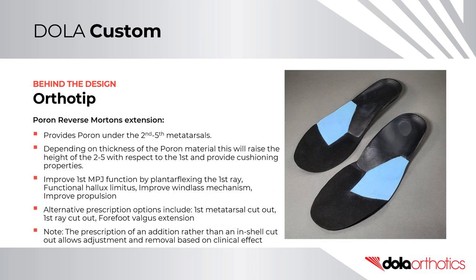Ortho Tip – A Poron reverse Morton's extension provides Poron under the second to fifth metatarsals. Depending on Poron thickness, it raises the height of the second to fifth with respect to the first and provides cushioning. It can improve first MPJ function by plantar-flexing the first ray, help with functional hallux limitus, improve the windlass mechanism, and improve propulsion. Alternatives include a first metatarsal cutout, a first ray cutout, or a forefoot valgus extension. Note: prescribing an addition rather than an in-shell cutout allows adjustment and removal based on clinical effect.